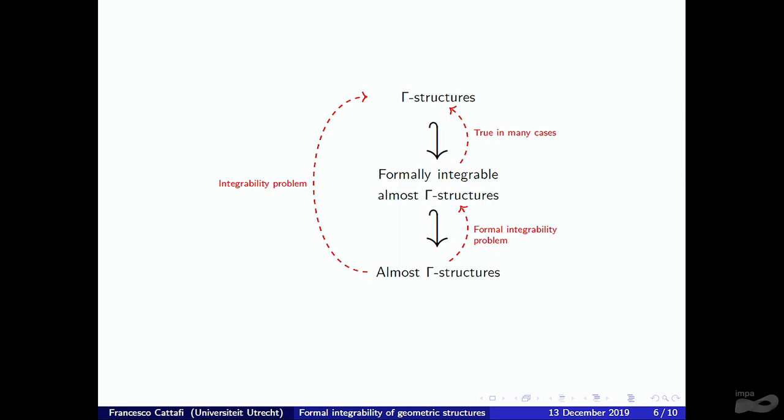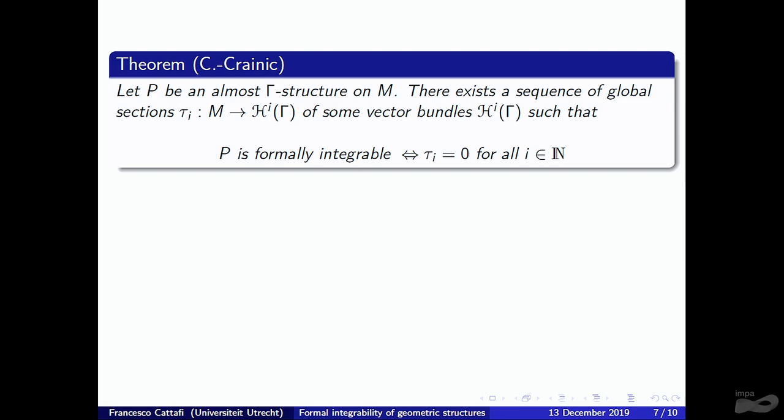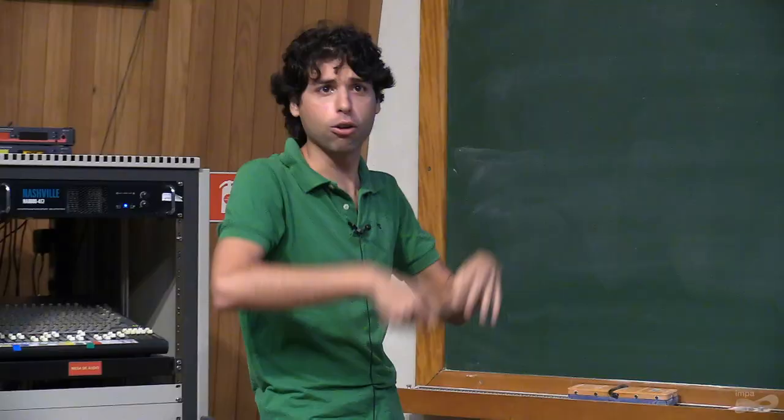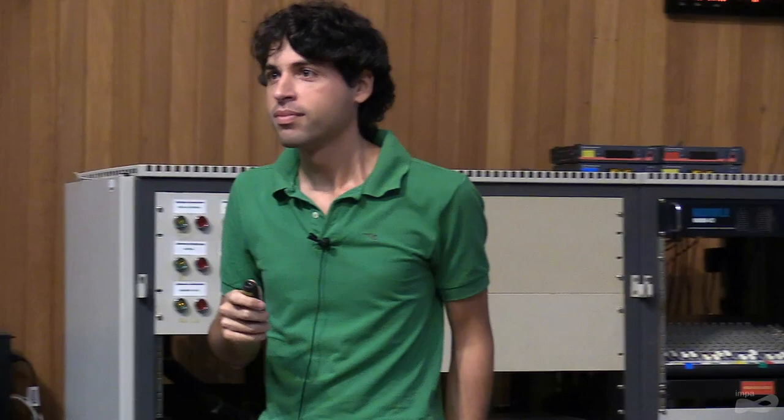The obstructions to formal integrability are sections of certain vector bundles H_i(gamma) over M. The vanishing of the i-th section is precisely the condition for P to be i-integrable; if they all vanish, P is formally integrable. The name H suggests these are related to cohomology — specifically Spencer cohomology. The sections must be constructed inductively: one builds the first obstruction, checks if it vanishes, then proceeds to the next level.